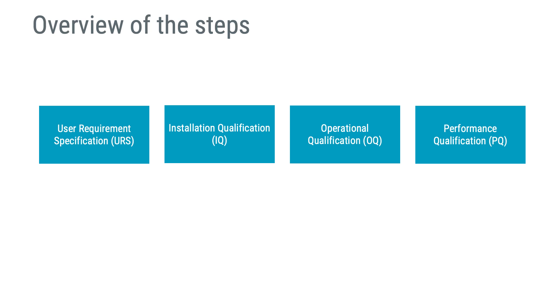Let me lead you through the activities involving process validation. A typical approach would be to first establish a documented procedure or an SOP, which is required both when selling to the US and the EU markets. This SOP should be based on the standards and guidelines I just mentioned. Before we go further, let me explain some abbreviations: User Requirement Specification is abbreviated URS; Installation Qualification is IQ; Operational Qualification is OQ; and Performance Qualification is abbreviated PQ. I will be using these abbreviations moving forward.